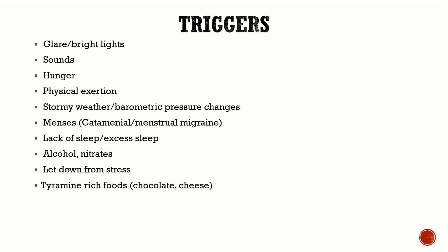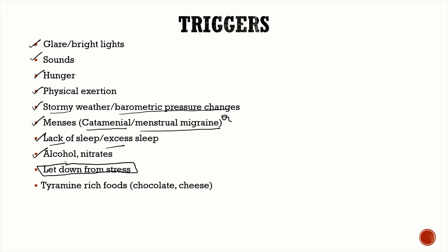Patients with migraine are very sensitive to sensory stimuli — bright lights and sound are important triggers. Other triggers include hunger, physical exertion, changes in weather such as stormy weather or barometric pressure changes, and menstruation. Migraine occurring only during the menstrual cycle is known as catamenial or menstrual migraine. Additional triggers include lack of sleep, excess sleep, alcoholism, let-down from stress, and rich food items like chocolate and cheese.